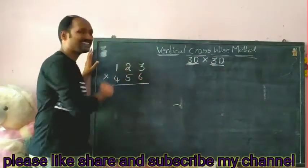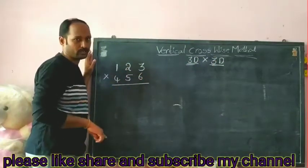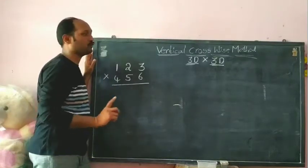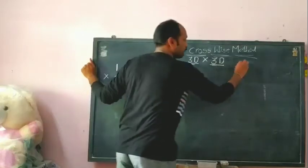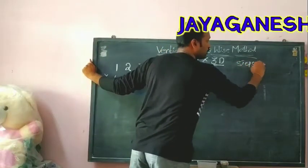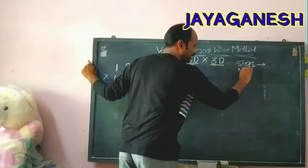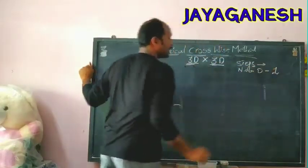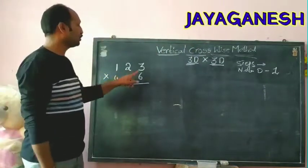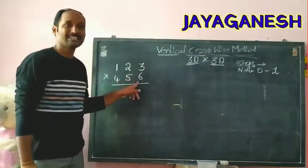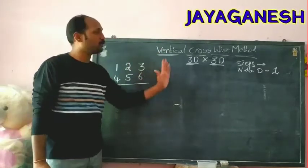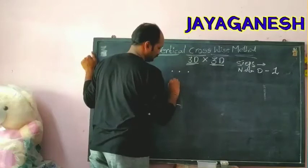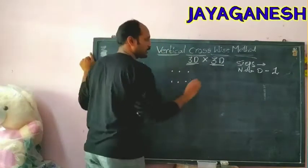Three digits plus three digits — total how many digits are there? Six digits. From the six digits you do minus one, and you will get five steps. First of all we need to find out how many steps you will get. Number of digits minus one — how many digits are there? One, two, three, four, five, six — six digits minus one gives you five steps. Then we will draw the five steps here using dots.